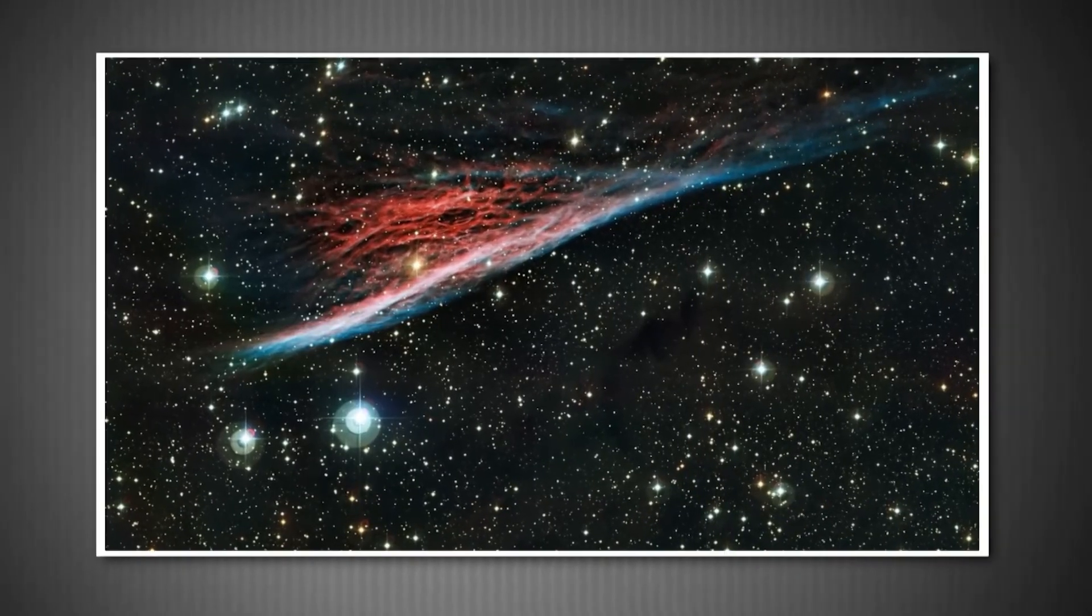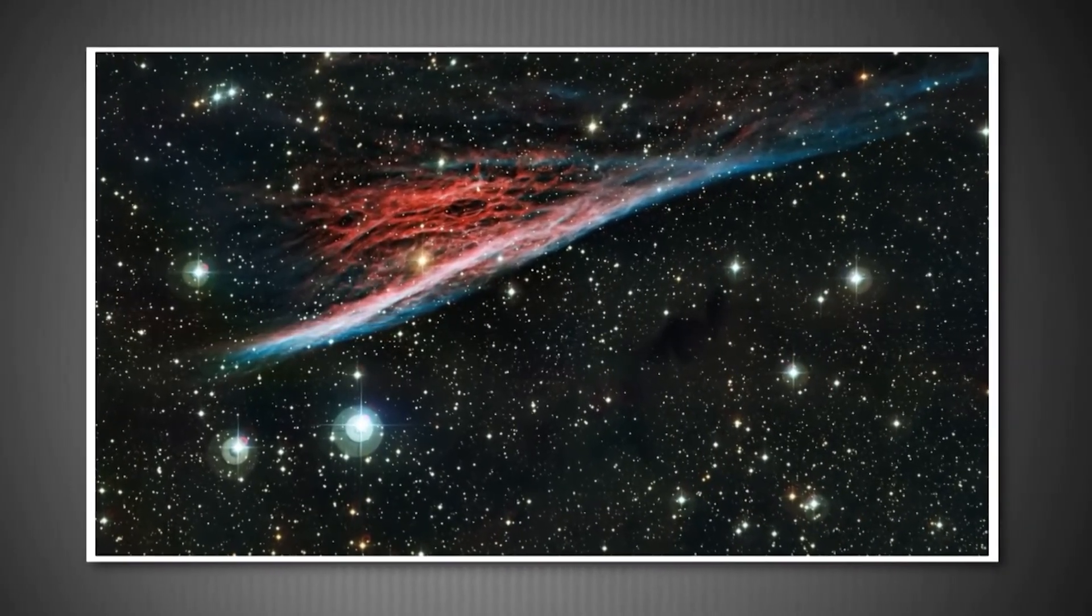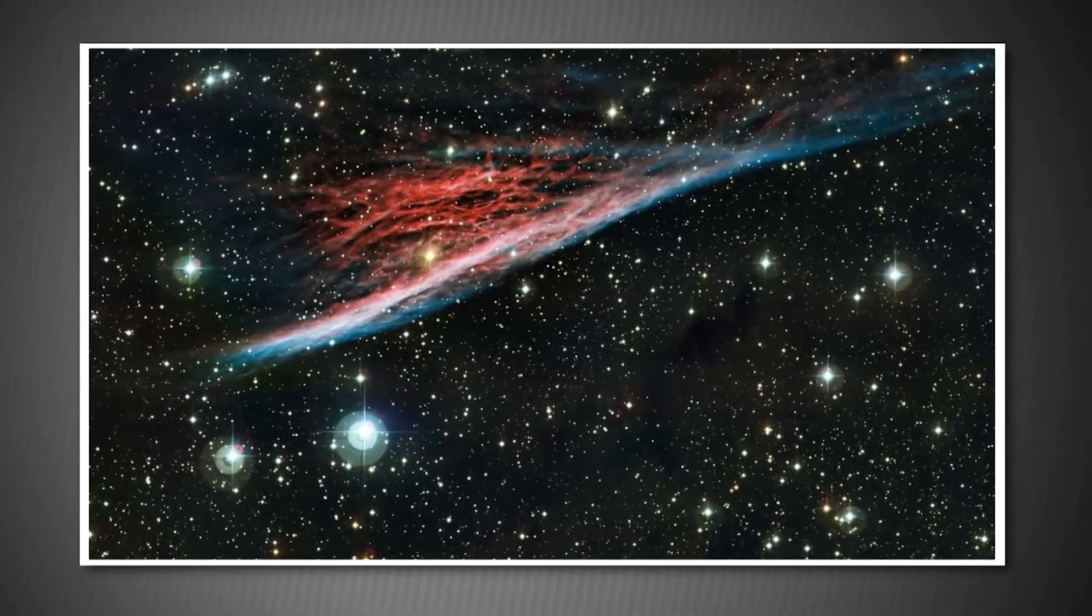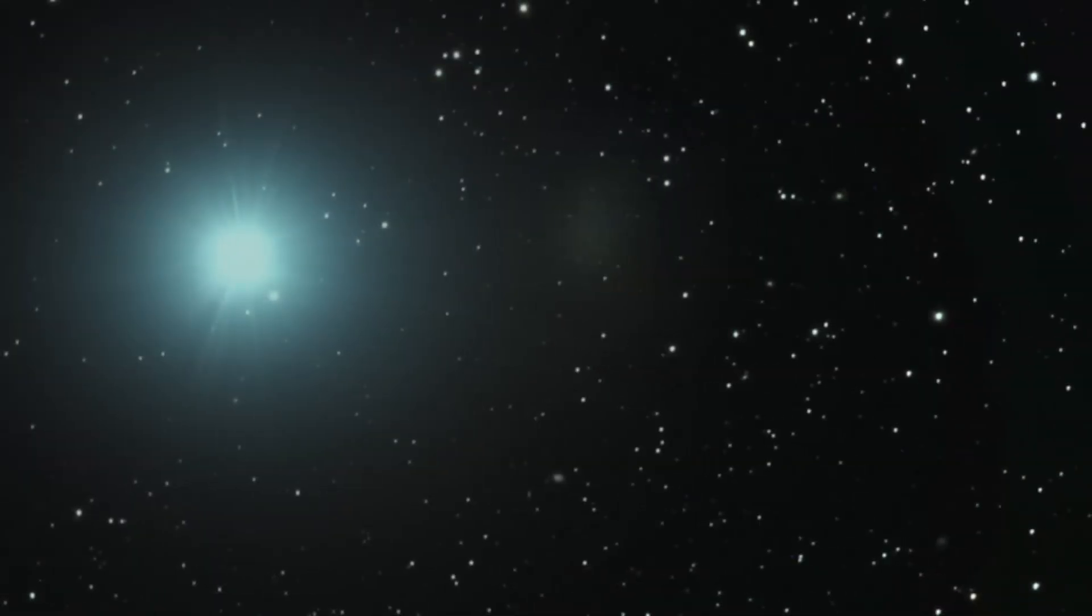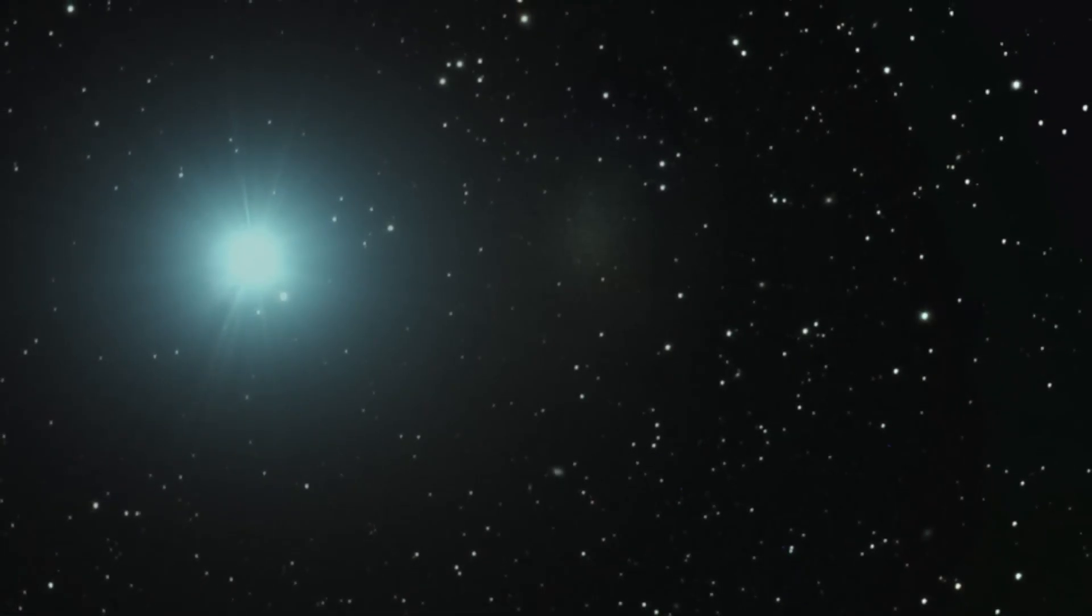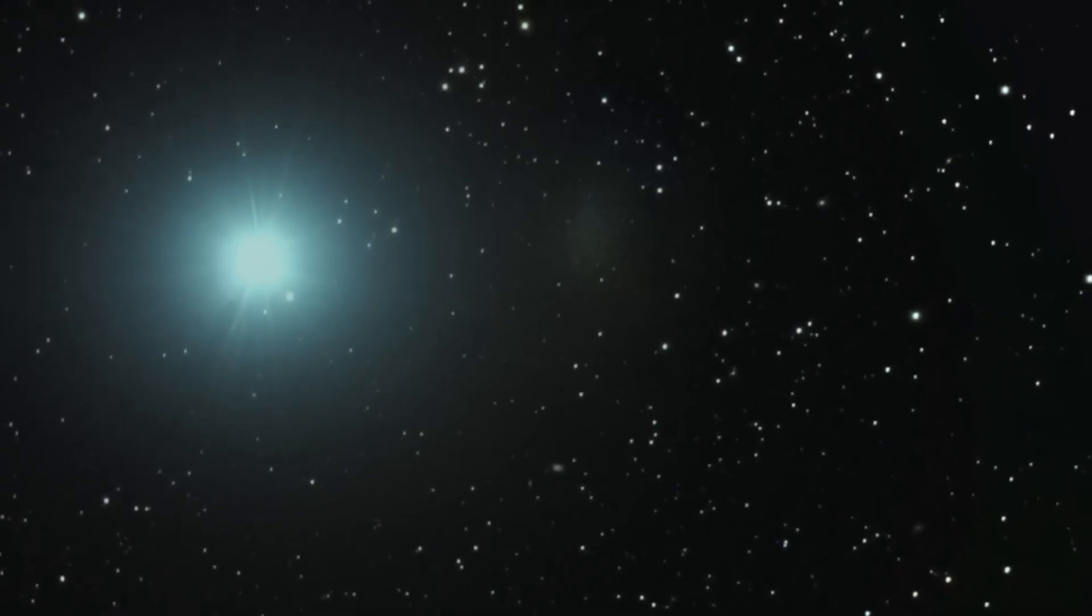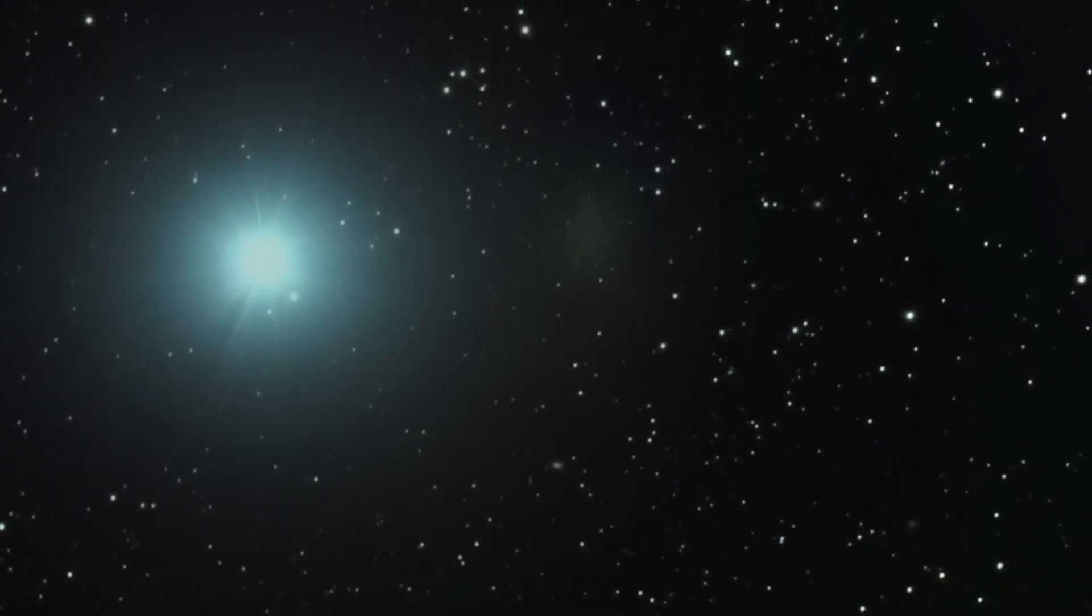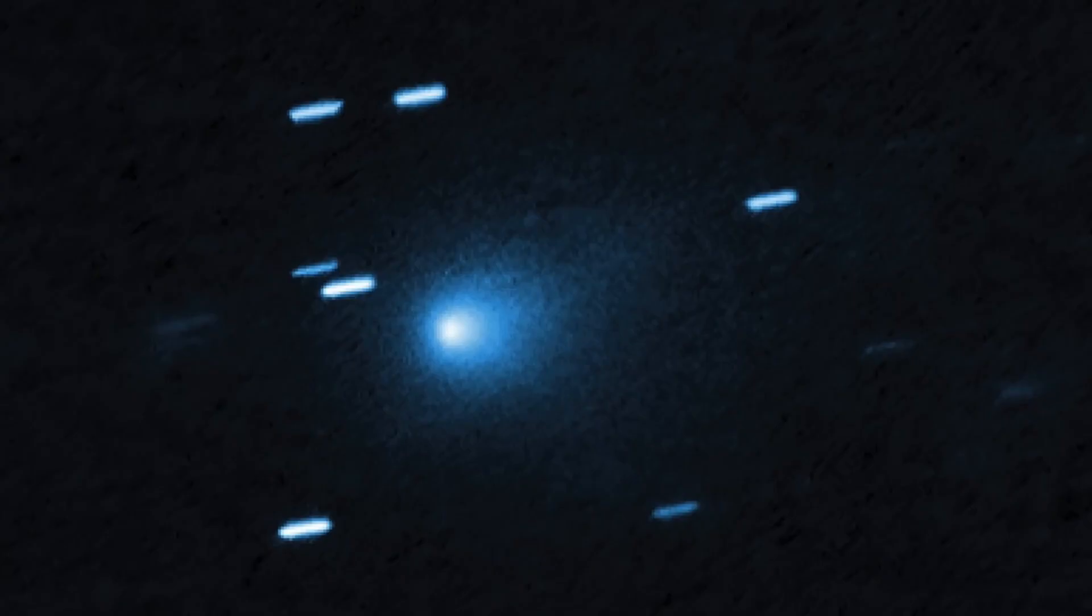But here's where it gets controversial. Harvard astronomer Avi Loeb published research suggesting that 3I ATLAS might be anomalously massive, weighing around 33 billion tons. His team analyzed the comet's trajectory and found that despite significant outgassing, the object shows very little non-gravitational acceleration. Normally when a comet releases gas and dust, it acts like a tiny rocket engine, slightly changing the comet's trajectory. But 3I ATLAS barely budges, suggesting its nucleus might be extremely massive and resistant to these forces.